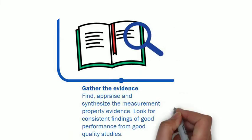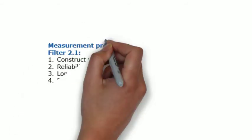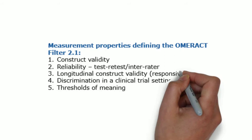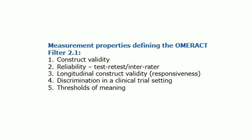The two questions are answered by looking for evidence of five measurement properties. These are construct validity, reliability, test-retest and interrater, longitudinal construct validity or responsiveness, discrimination in a clinical trial setting, and thresholds of meaning.